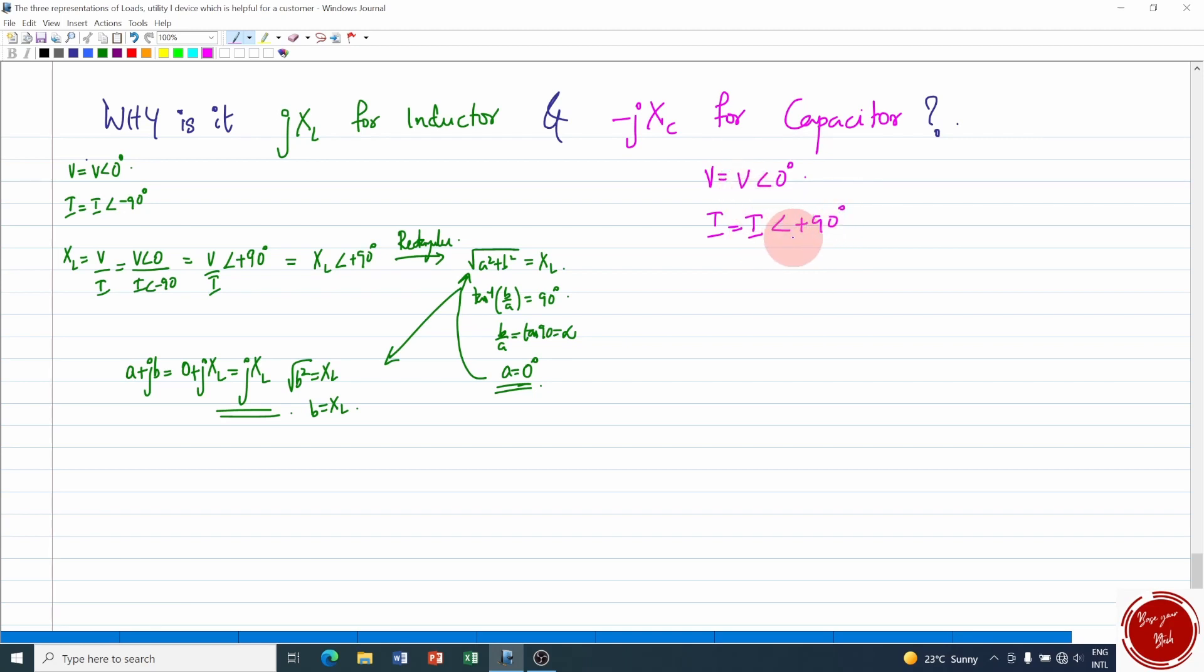Now XC or the capacitive reactance is equal to V/I which is V∠0° divided by I∠+90°. Taking the denominator to upside you get V/I∠-90°. The sign is reversed so it is XC∠-90°.